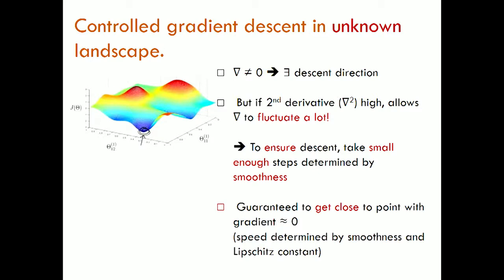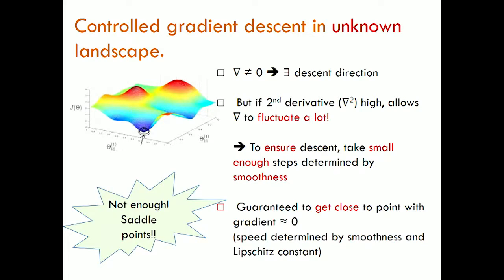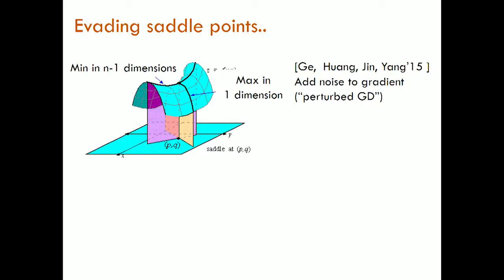So you get to a point where the gradient is approximately zero. Is that enough? No, because there could be saddle points — a point where you could be a minimum in n minus one dimensions and a maximum in the other. So there is still a descent direction, but how do you find that one dimension in high dimensions? It's like a needle in a haystack.